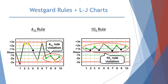The 4-1S rule is violated when four consecutive QC points fall either below or above one standard deviation — shown in the image by four circled values all just below minus one standard deviation. The 10X rule violation occurs when ten consecutive QC results fall above or below the mean, shown with all ten circled values falling above the mean.